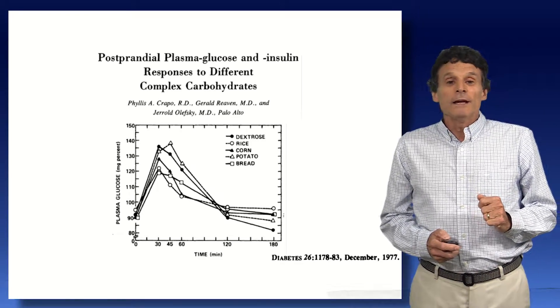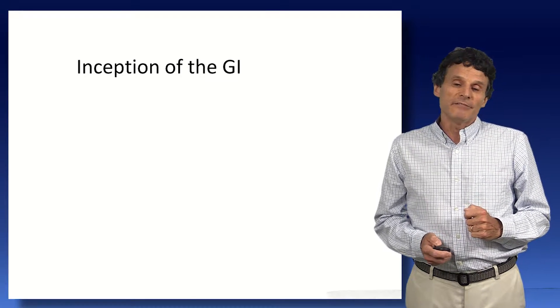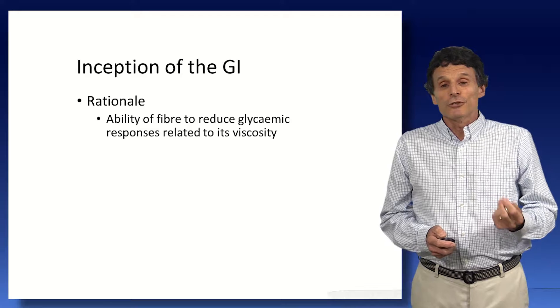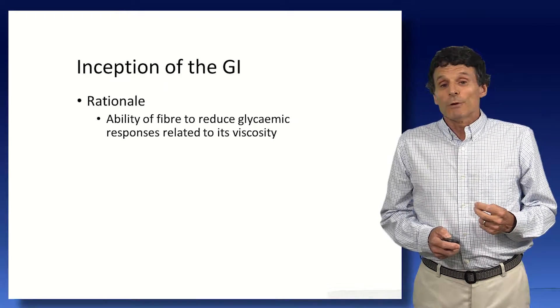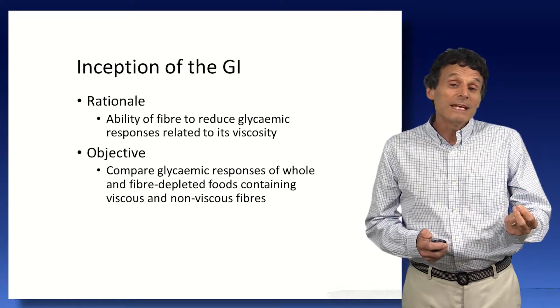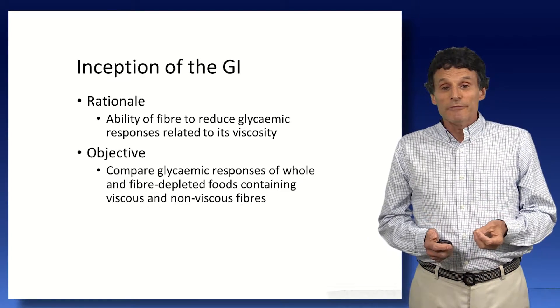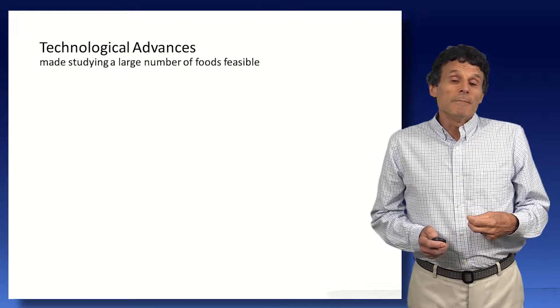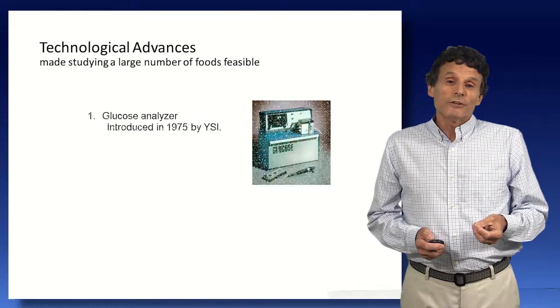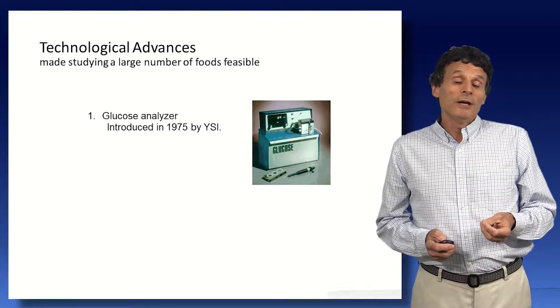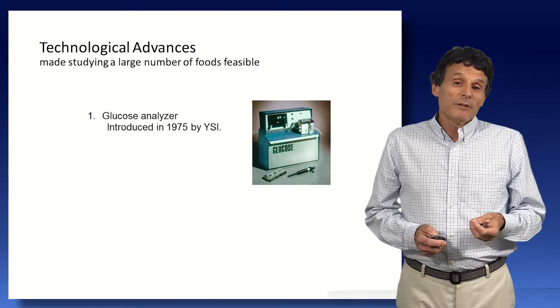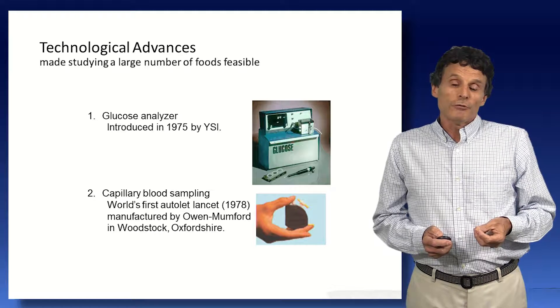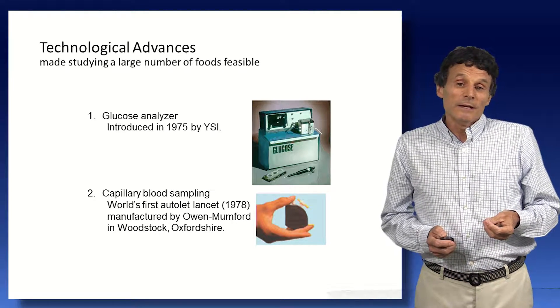Now we weren't aware of this work when we got into the GI. We moved into it because we had been studying the effect of fiber, dietary fiber, on glucose responses. And we found that the ability of purified fibers to reduce glucose was related to viscosity. And so we wondered what would be the impact of foods containing viscous fibers, such as oats and legumes, as compared to non-viscous fibers, such as wheat bran, on glucose responses. And some technological advances had recently been made, which made studying a large number of foods feasible for us. One of them was the development of an automatic glucose analyzer, which could analyze blood glucose on just 25 microliters of blood. And the other was the invention of the world's first modern version of the capillary blood sampling system, which was made just a few miles up the road from us in Oxford. And we had some of the earliest samples of this equipment.